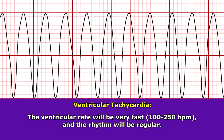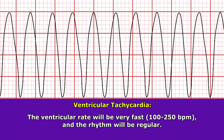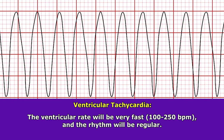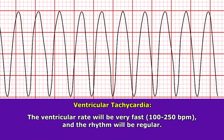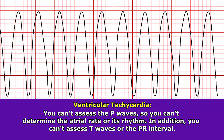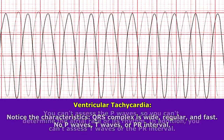Because of this, the ventricular rate is going to be very fast, anywhere between 100 to 250 beats per minute, and the rhythm is going to be regular. Because of this, you really can't assess the T wave. In addition, you can't assess P waves either, so you won't be able to determine the atrial rate or its rhythm, or assess the PR interval.